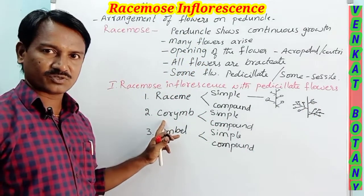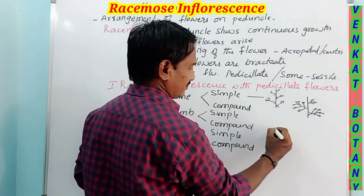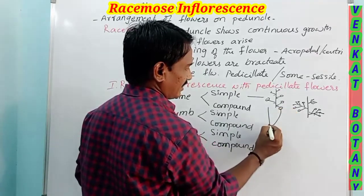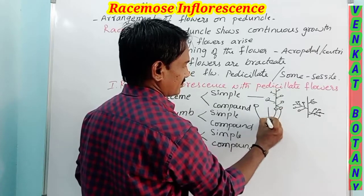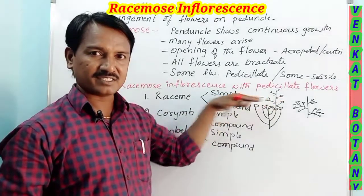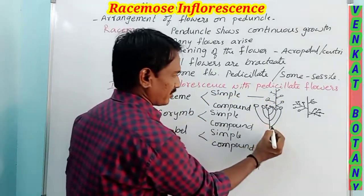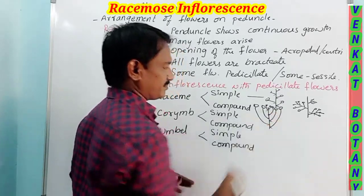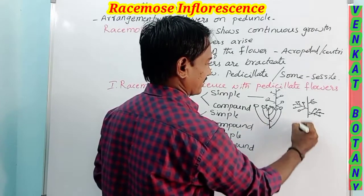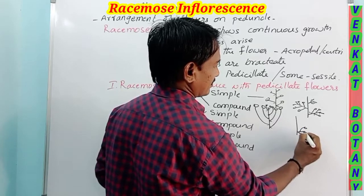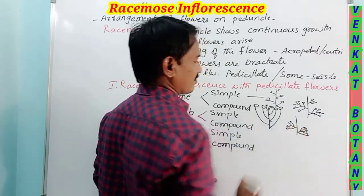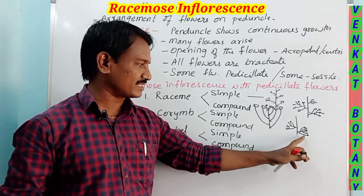Corymb: the peduncle shows continuous growth. Lower flowers have long pedicels and upper flowers have short pedicels, so that all flowers are brought to the same height. That is called corymb. In compound corymb, the peduncle has branches, and each branch resembles a simple corymb.